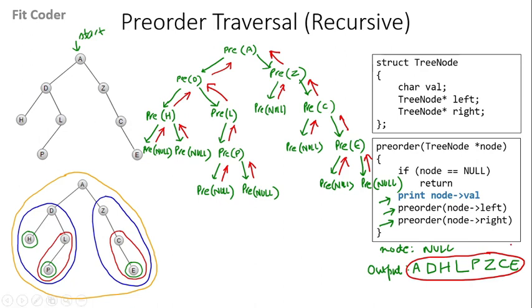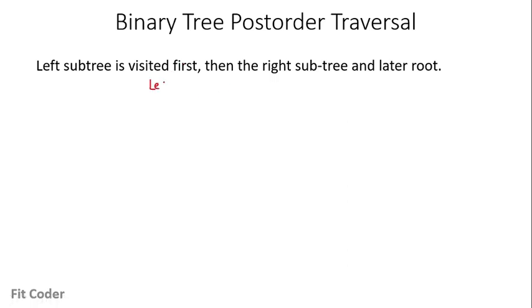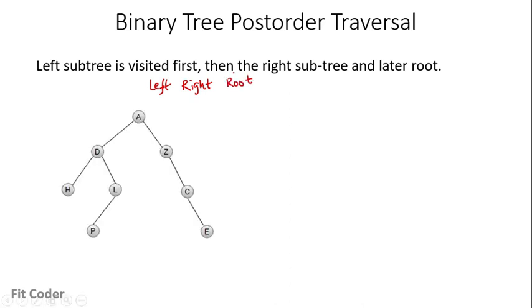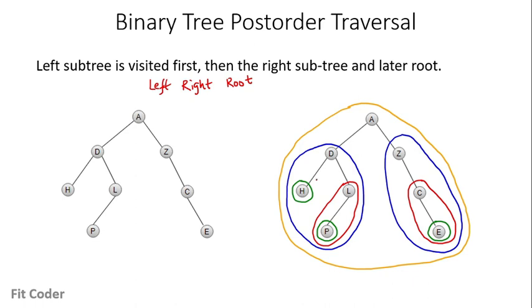Now let's check the post-order traversal. In post-order traversal, we first visit the left subtree, then visit the right subtree, and at last we visit the root. Decomposing the tree into subtrees: we first check the left blue subtree. The leftmost node is H, so we start from H, then go to the right subtree where the left is P. We then go to the right of L — nothing is there — so we print the root L, then print D. We then check the right subtree of A. Notably, in post-order traversal the root will always be the last element, while in pre-order traversal the root is the first element.